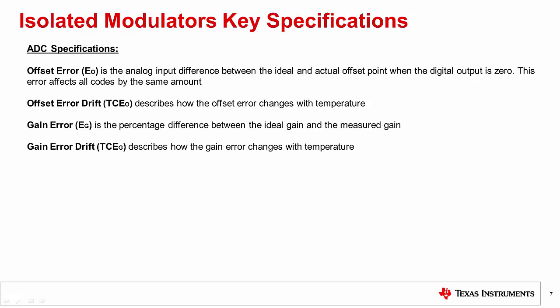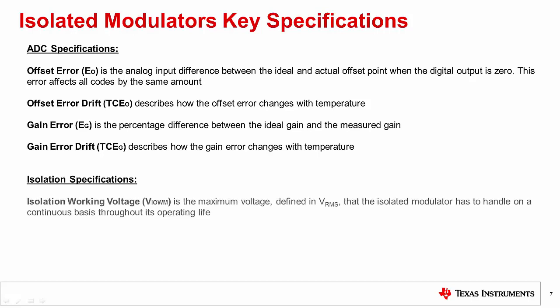Now we will go over some common isolation specifications. First, we will consider isolation working voltage, which is the maximum voltage defined in volts RMS that the isolated modulator has to handle on a continuous basis throughout its operating life.